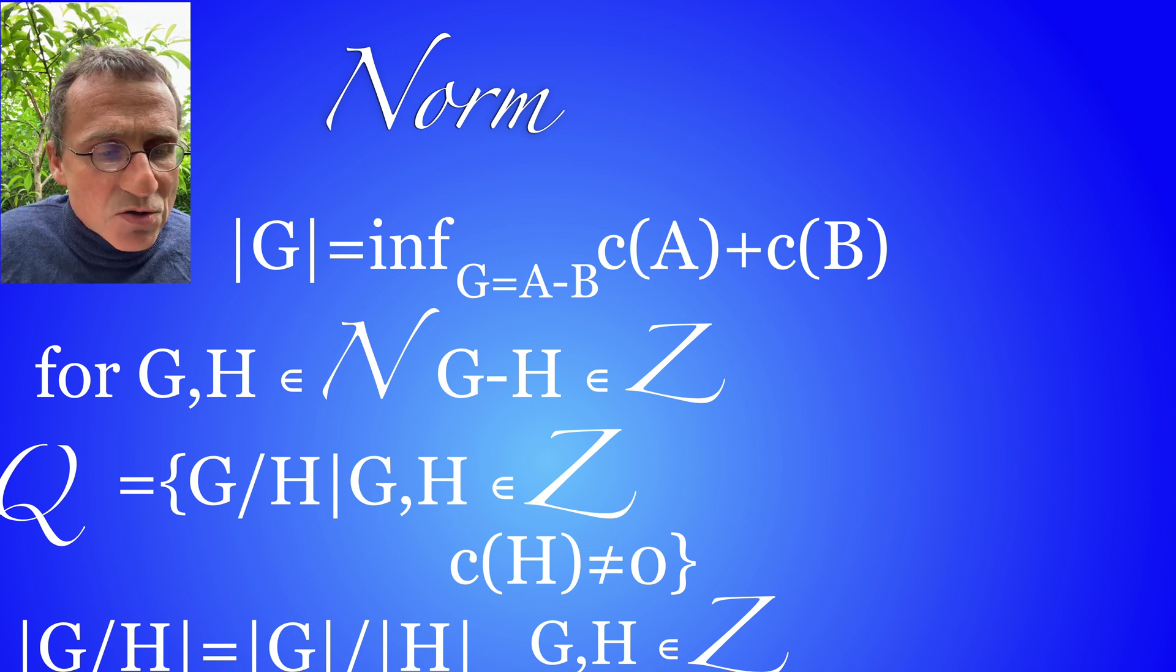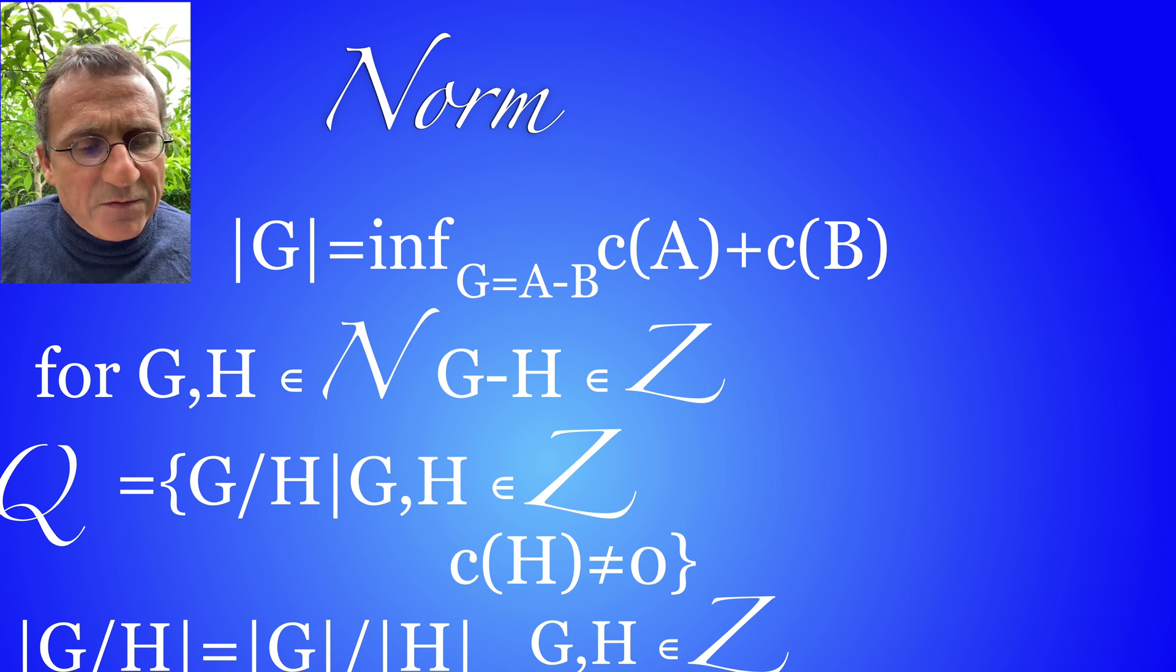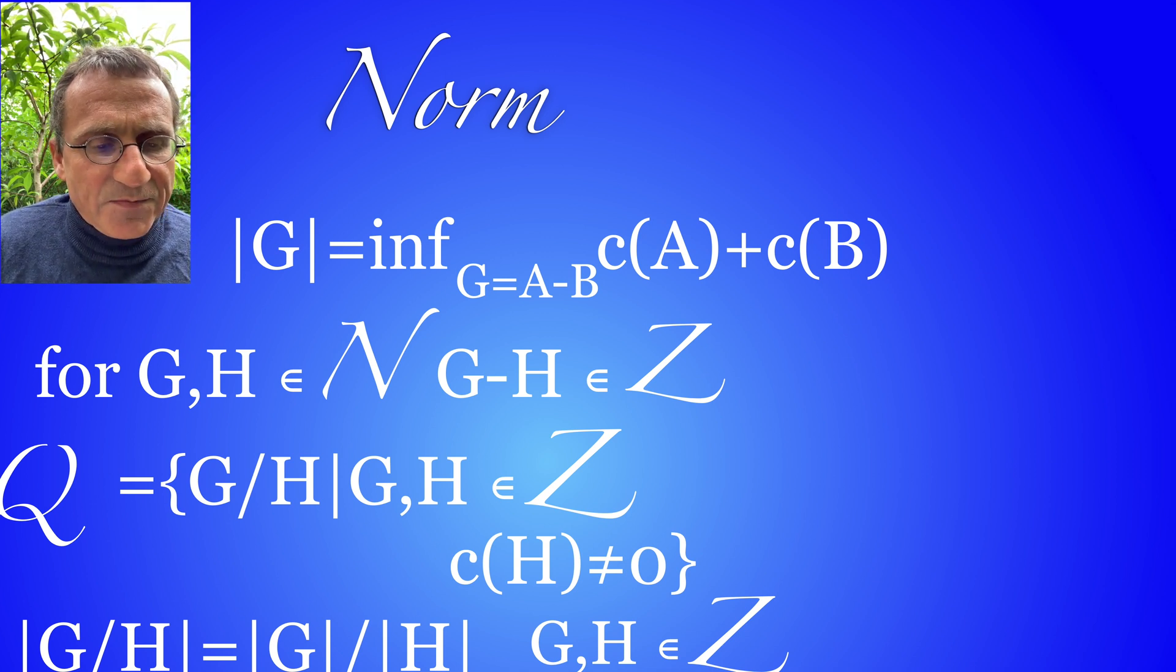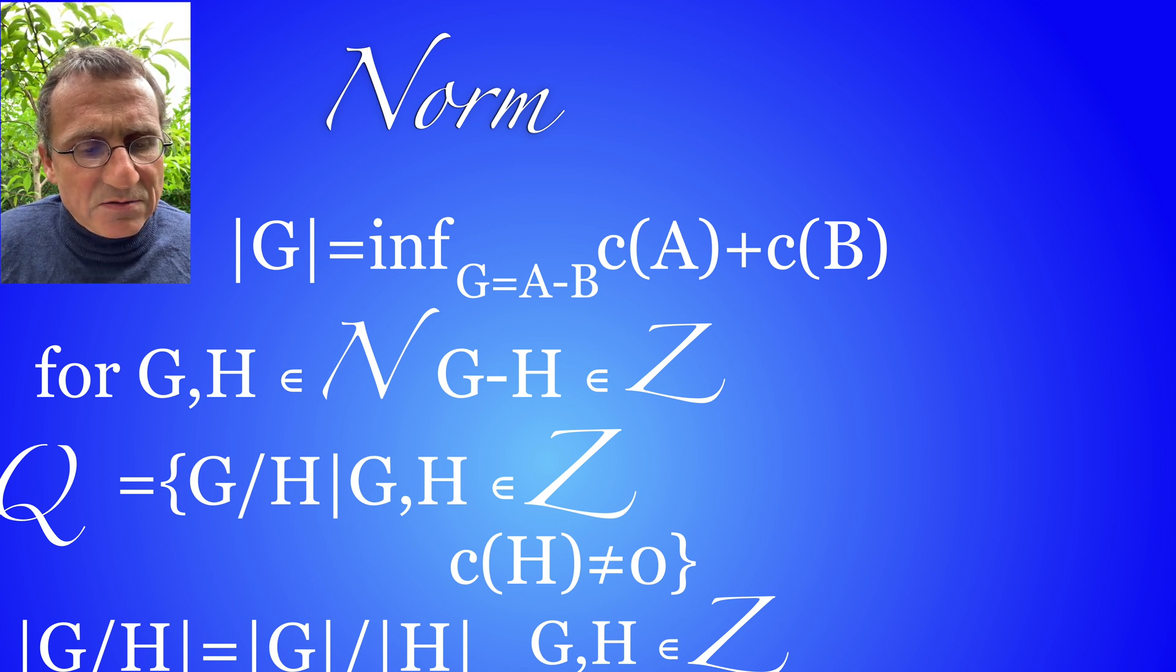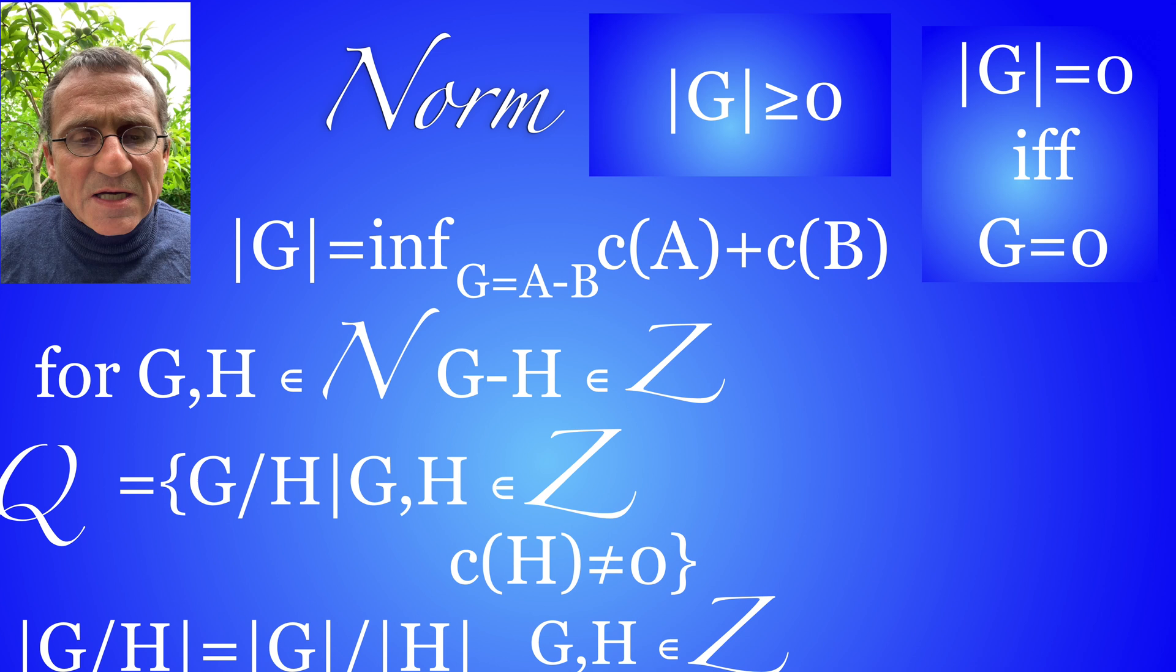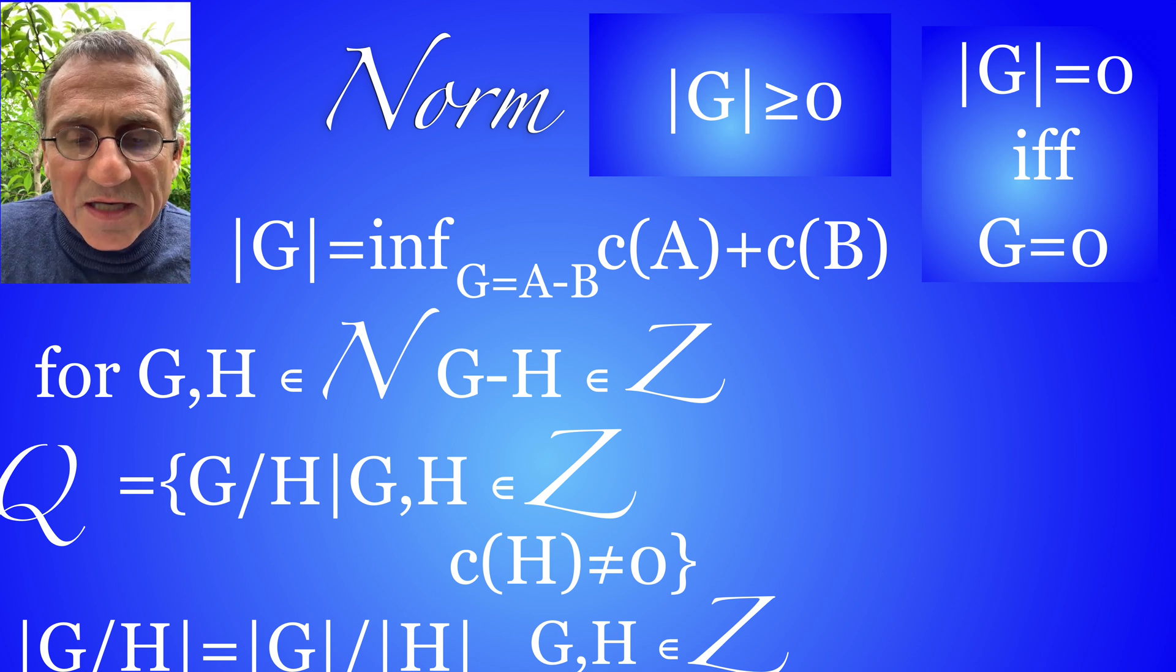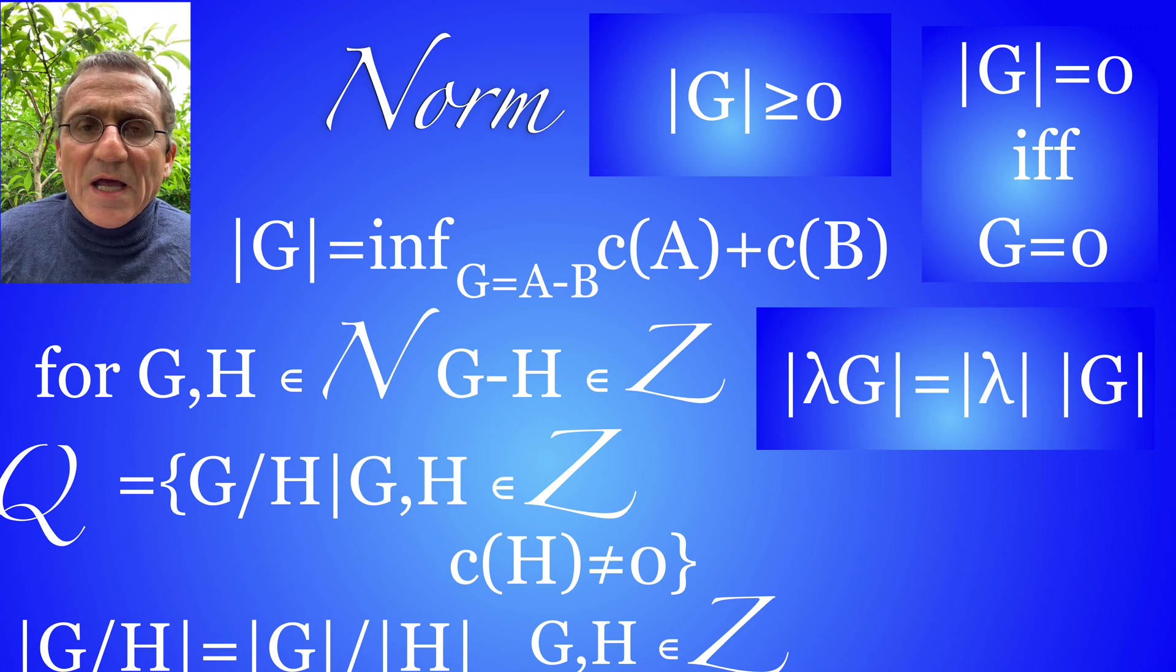The rationals q, they are all the graph fractions where c of g over h where c of h is not zero and the norm then behaves nicely with respect to that, at least for integers. So it is non-negative, it is zero even though if g is zero, and it behaves nicely with the scalar multiplication.